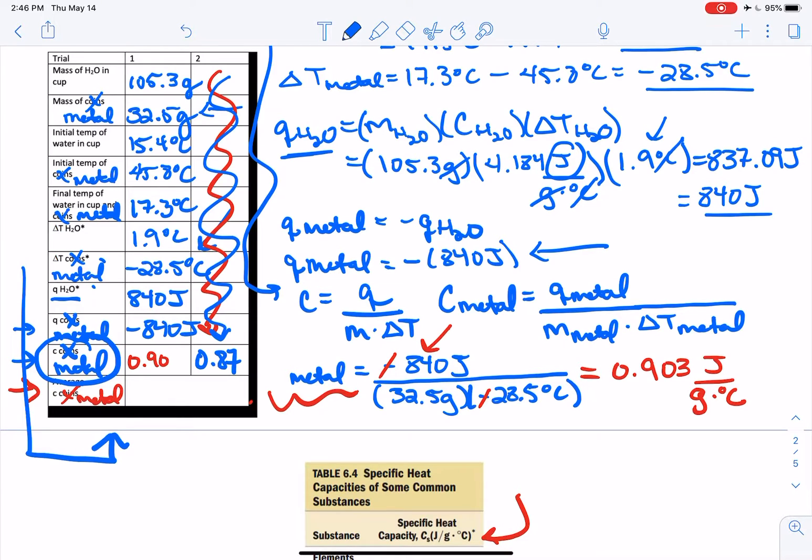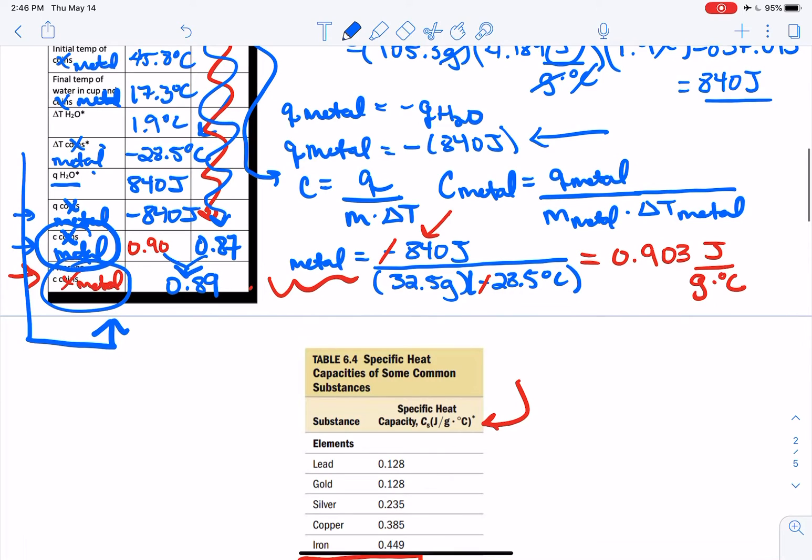In order to get the average, so I know there's a lot of writing on there but that says the average, we would add these two up and divide by two and what we would get here for our phony experiment is 0.89. And then the experiment asked you guys to take that value and calculate the percent error.